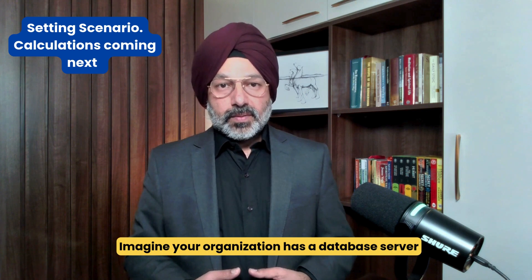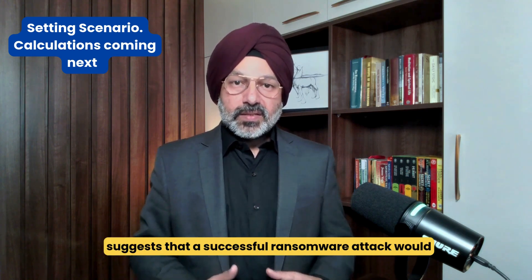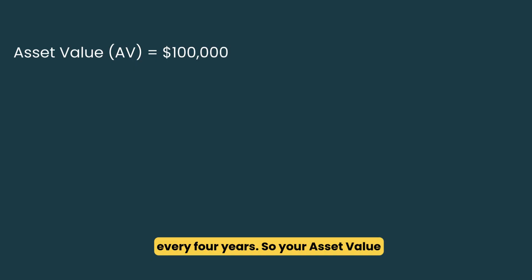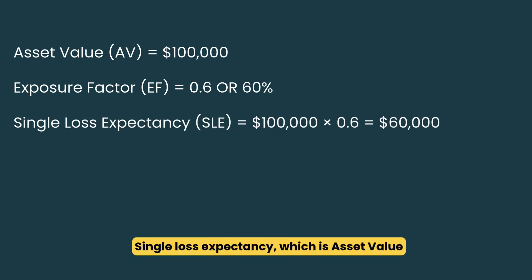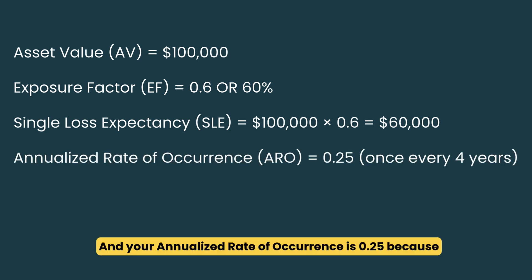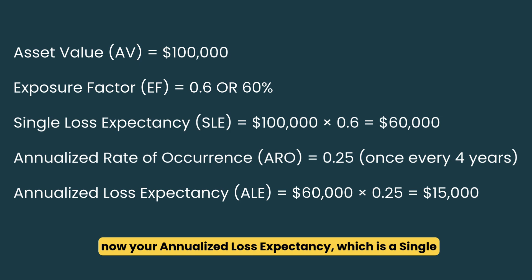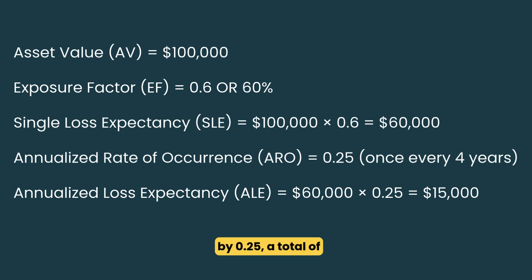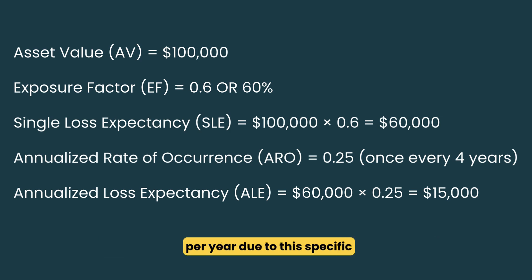Let's work through a complete example. Imagine your organization has a database server valued at $100,000. Security analysis suggests a successful ransomware attack would impact about 60% of its value, and the likelihood of such an attack is estimated at once every four years. So: asset value = $100,000; exposure factor = 0.6; single loss expectancy = $100,000 × 0.6 = $60,000; annualized rate of occurrence = 0.25. Therefore, annualized loss expectancy = $60,000 × 0.25 = $15,000. This means the organization can expect to lose approximately $15,000 per year due to this specific risk.